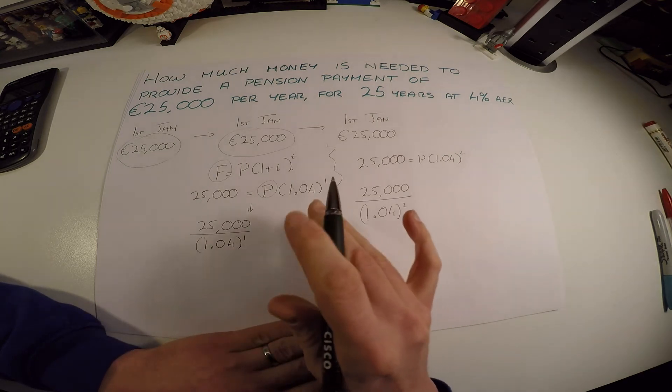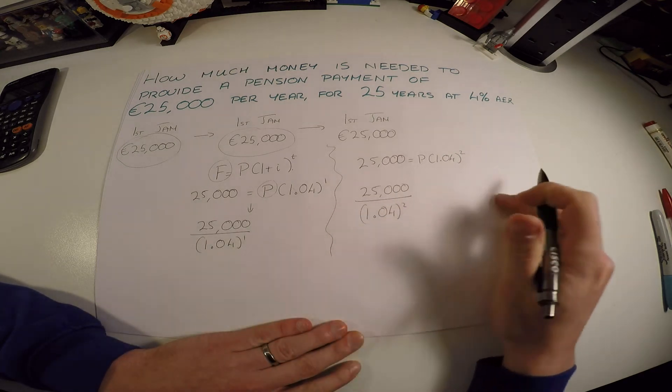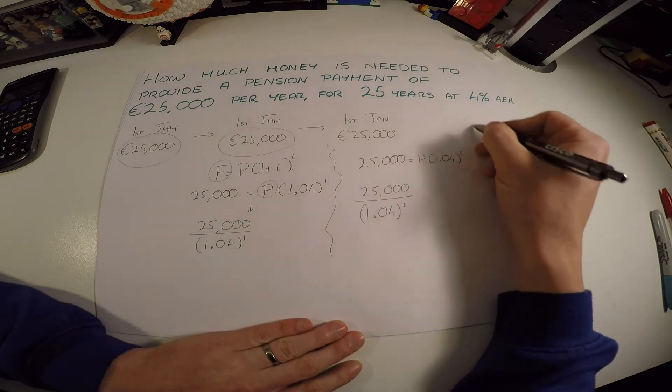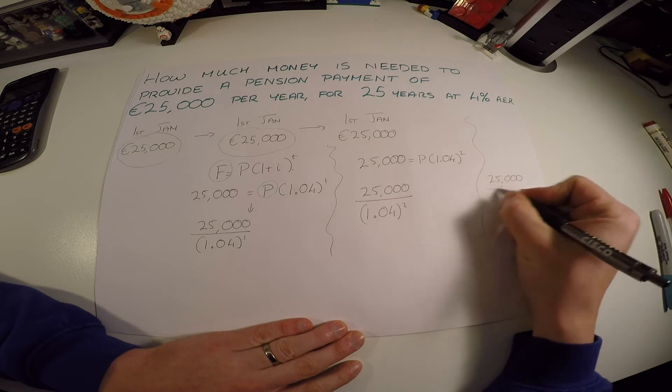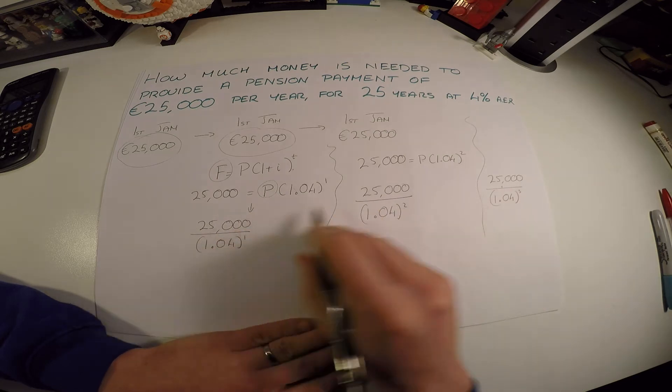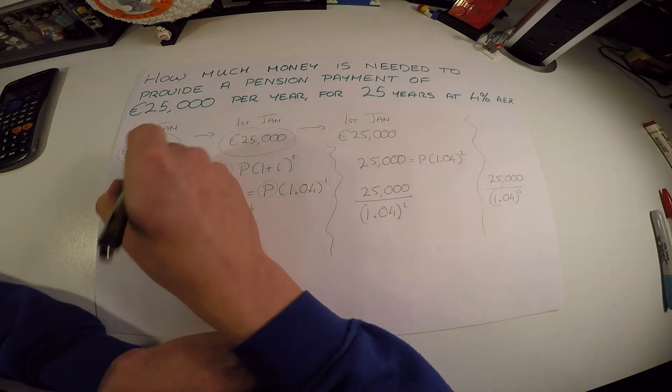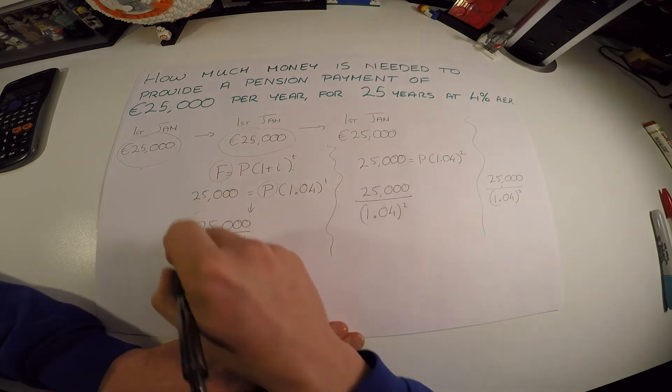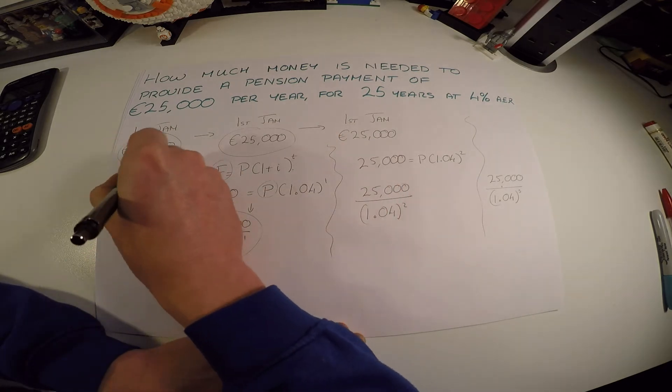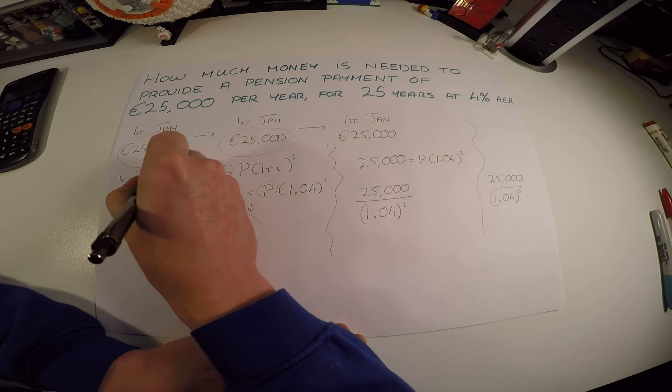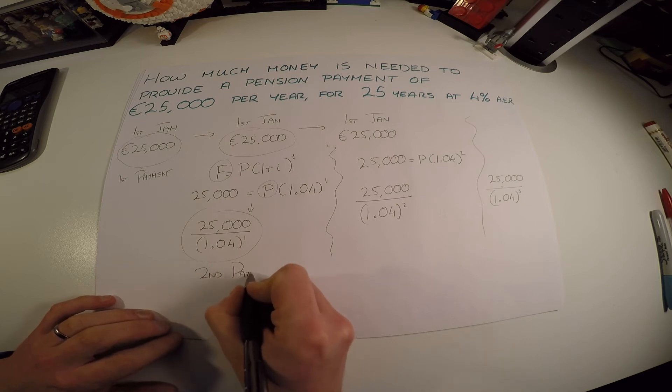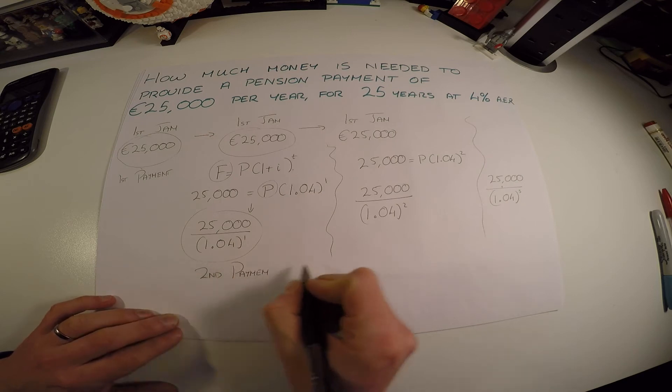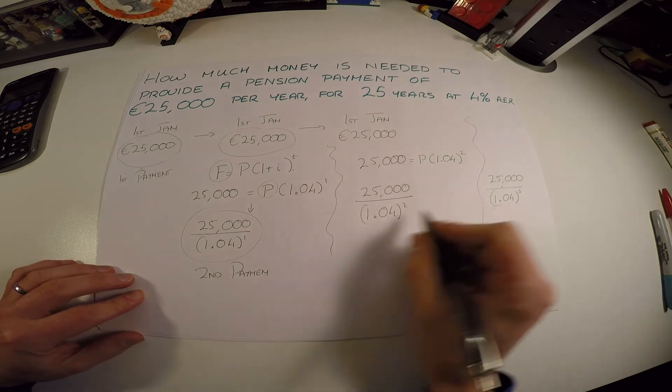So what I'd hope you'd see now is that every single one is going to constantly go up like this. So we're going to have the next payment is going to be 25,000, and that's going to be over 1.04 cubed. And we're going to have all these different payments. If this was the first payment, this would be the second payment here. So this is the first payment, this is the second payment, and so on, the third payment, the fourth payment.